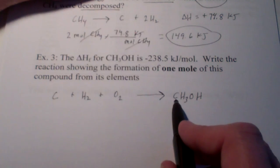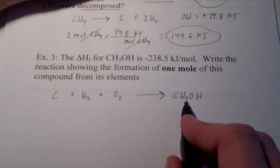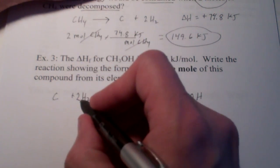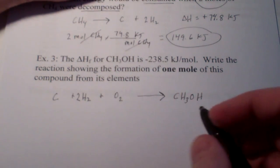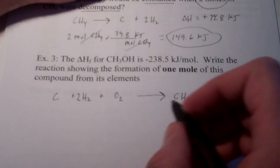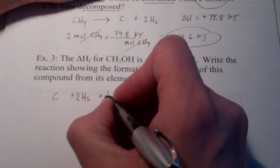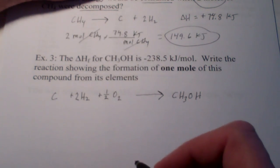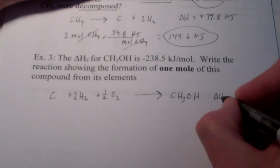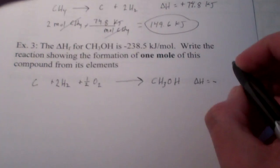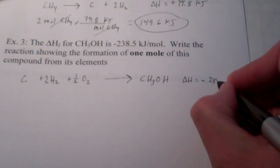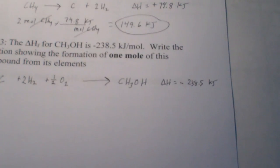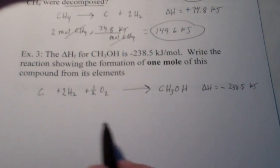So, one carbon and one carbon. Perfect. We have four hydrogens on this side. So, I need two H2s on this side. And, I only need one oxygen on the product side. So, if you put the fraction one-half in front of O2, you did a great job. Now, the delta H of this reaction is negative 238.5 kilojoules. Okay? So, that's what it should look like.